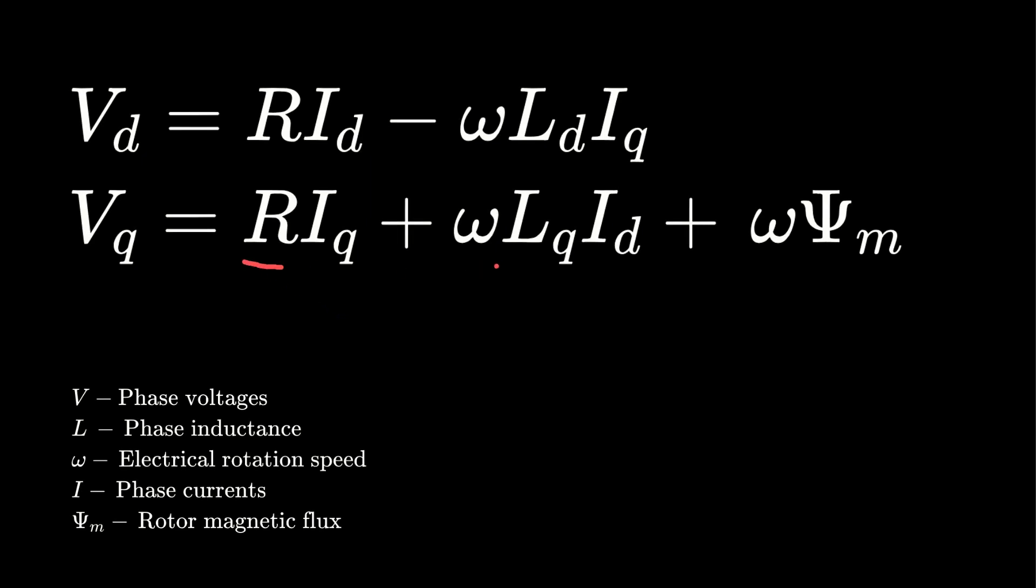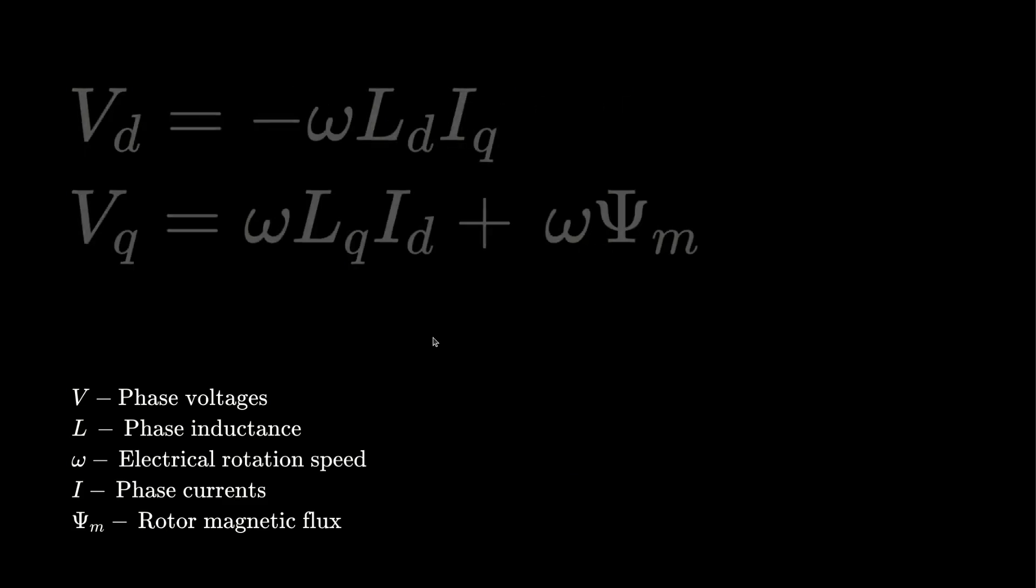Let's take a look at a permanent magnet motor's steady state voltage equations to find the answer. The constants are the stator resistance, inductance, the electrical rotating speed, and the magnetic flux of the permanent magnets. All the constants are positive, and I'll also assume IQ is positive. To simplify the equation a bit, it's common practice to neglect the stator resistance, since it's usually not as significant. So let's get that out of the way.